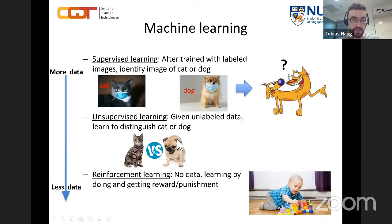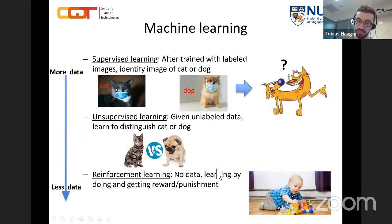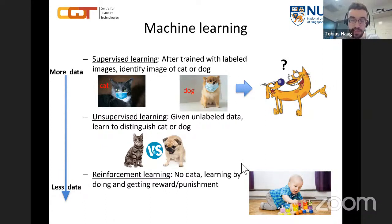Finally, reinforcement learning is the setting where you give the machine the least data — in fact, no data at all. Instead, the machine learns by doing, getting rewards and punishments. A common example is teaching the machine to play a video game. In the context of reinforcement learning, you give the machine control of the game — say a race game — and let it play.